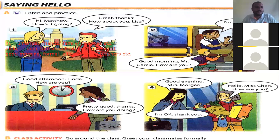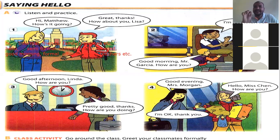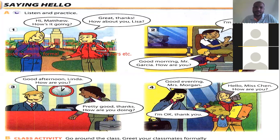First observation: 'Hi, Matthew. How's it going?' — you pronounced it as 'how's it's going.' Try to correct it. How's it going? 'How's' means 'how is it going.' How is it going? How's it going. Next — 'Great, thanks.' You're saying 'great, thank you' then moving on. Try to put a little focus.